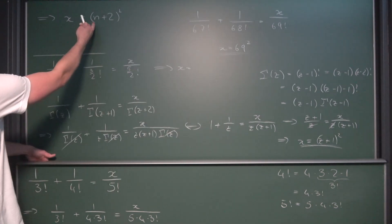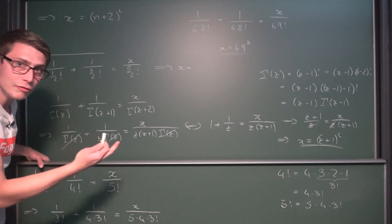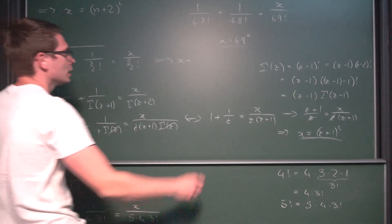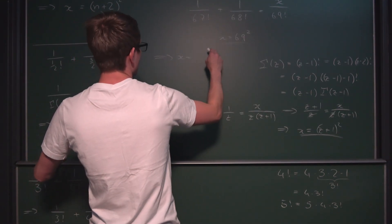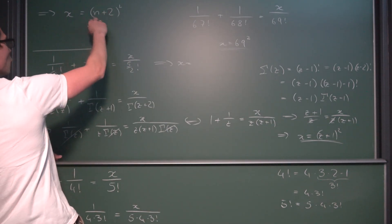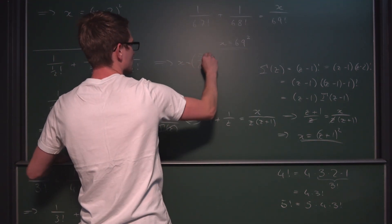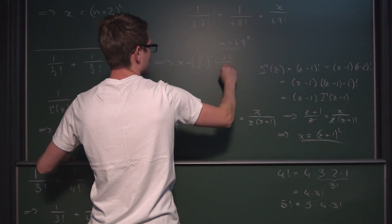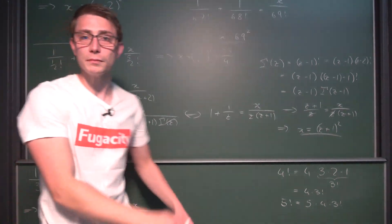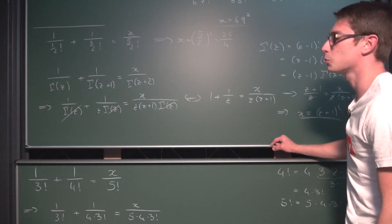So x is going to be n plus 2 squared overall. In our case n is one-half: one-half plus 2 gives us 5 over 2, and 5 over 2 squared is 25 over 4. Which is going to be the solution for x in this equation. I think that's a pretty cool equation and a very cool property of this problem.